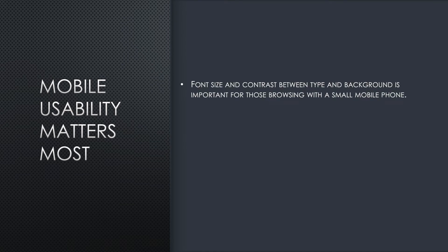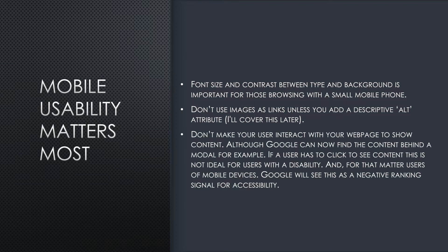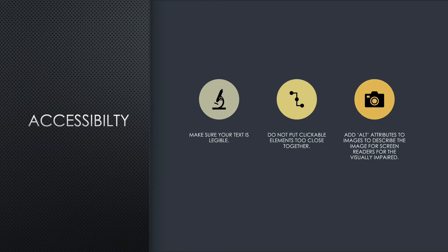Mobile usability matters most. Font size and contrast between type and background is important for those browsing on a small mobile phone. Don't use images as links unless you add a descriptive alt attribute. Don't use images to convey important information unless absolutely necessary, and if you do, give it an alt attribute. Don't make your user interact with your webpage — modals or JavaScript-hidden content is not good for usability. Google might be able to read it, but they will see it as negative for usability. Make sure your text is legible, do not put clickable elements too close together, and add alt attributes to images to describe them for screen readers for the visually impaired.